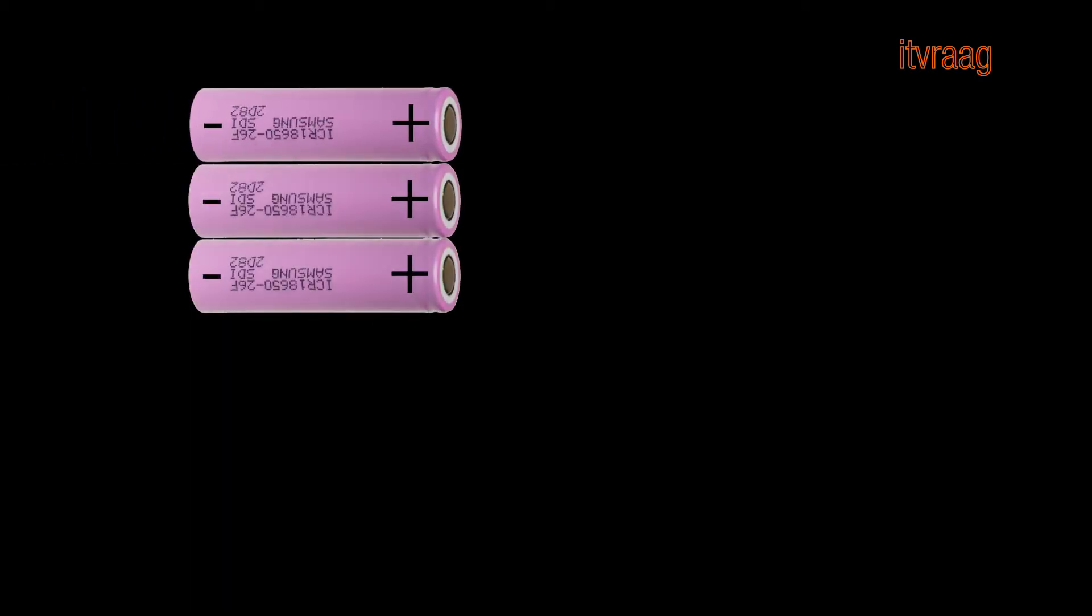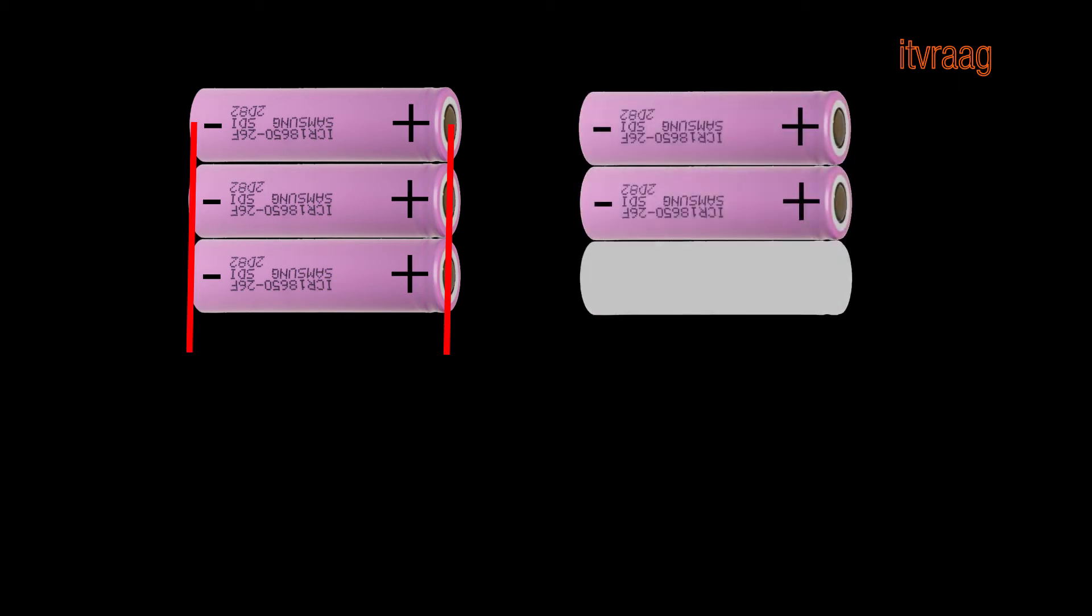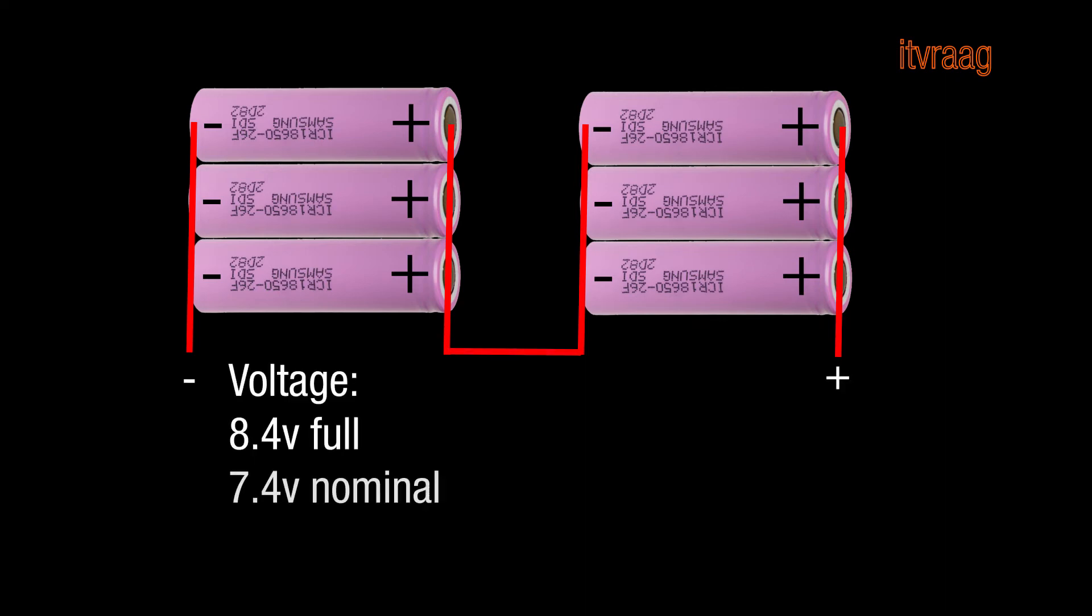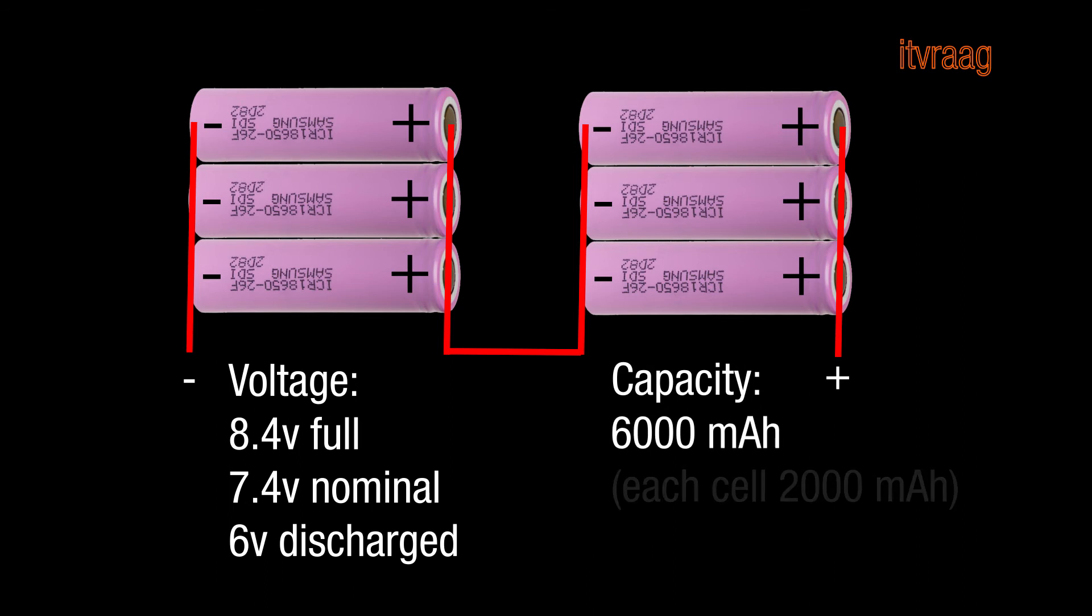You can also combine the two, thus increasing the voltage and amps. For example, in this setup we have doubled the voltage which makes 8.4 volts when fully charged, a nominal voltage of 7.4 volts, and 6 volts when discharged. As for capacity, it's tripled which makes 6000 milliamp hours when each cell has 2000.